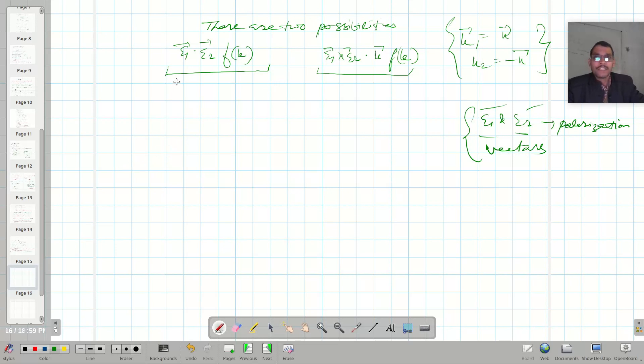But if we consider this case, we have considered polarization vector as well as direction. So if I try to look at this, it is a vector triple product.